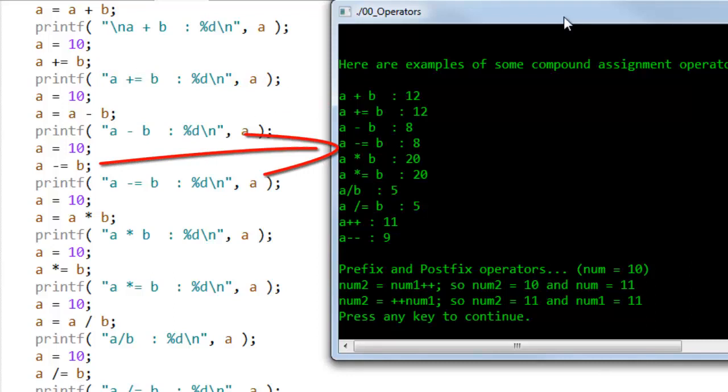Here I have A minus equals B. Again A is 10, B is 2, so minus equals subtracts 2 and assigns the value back to A which is 8.